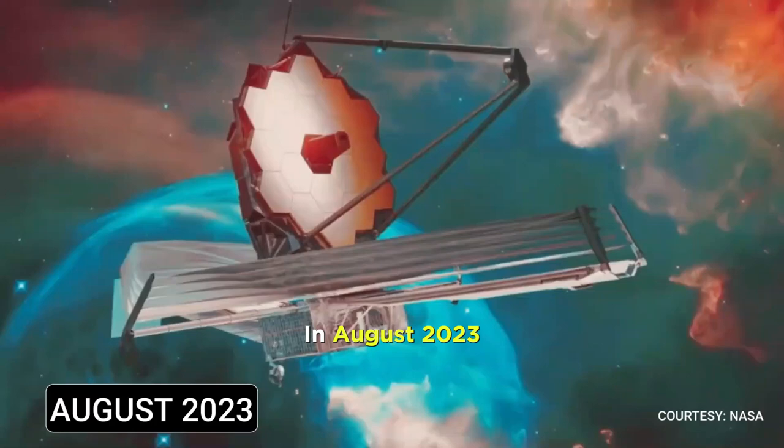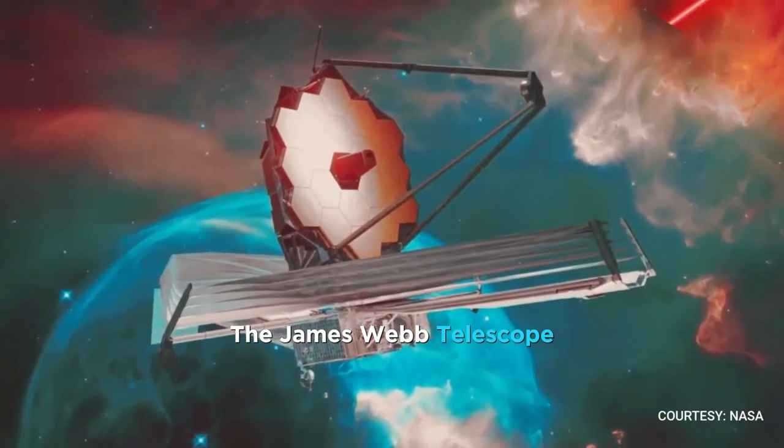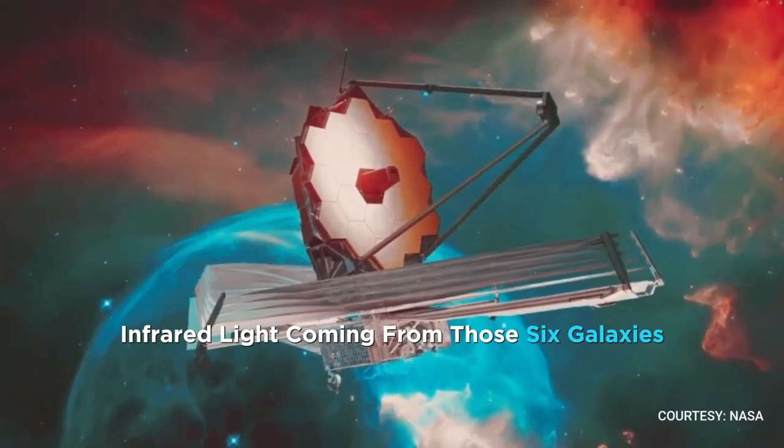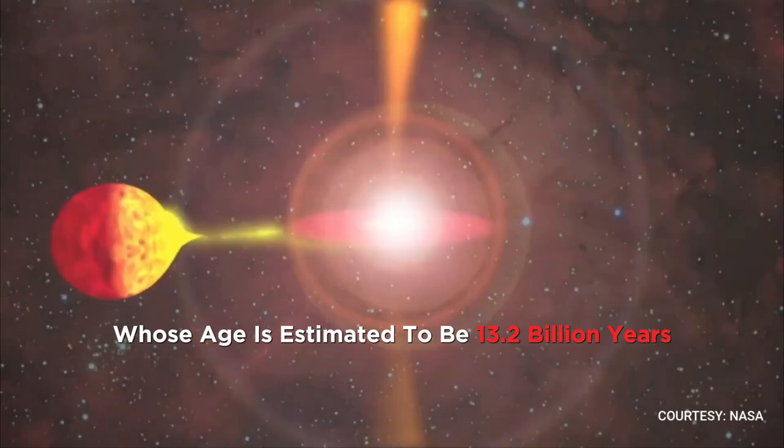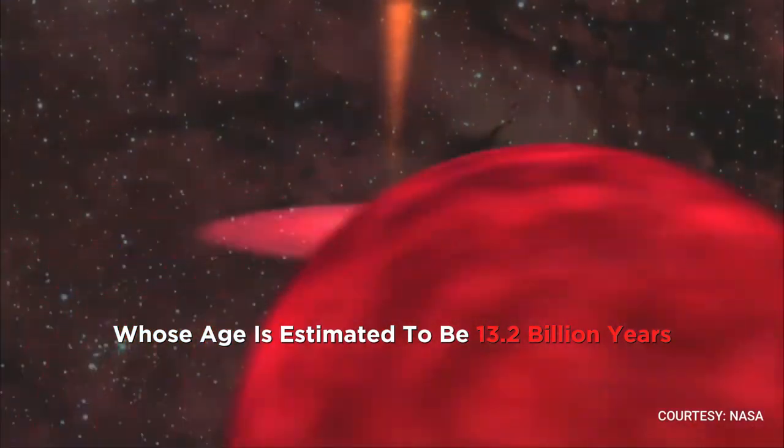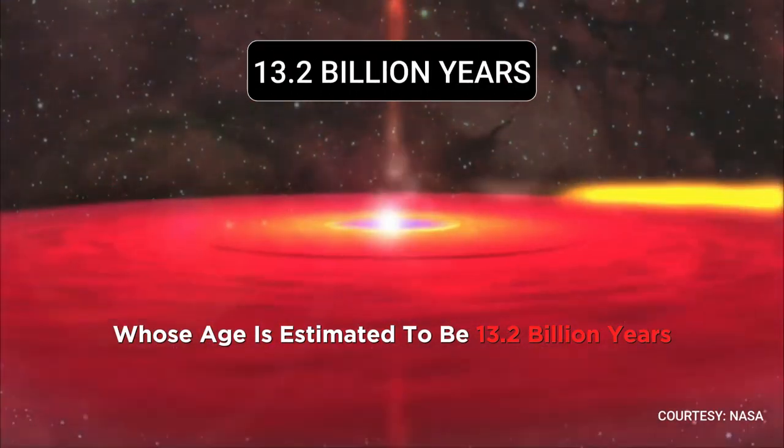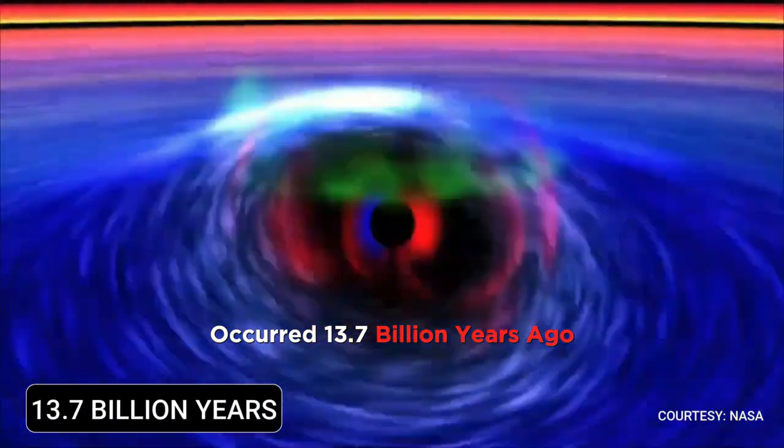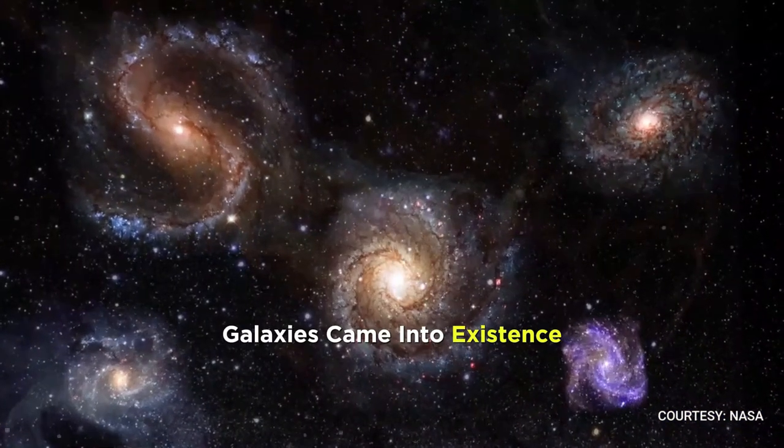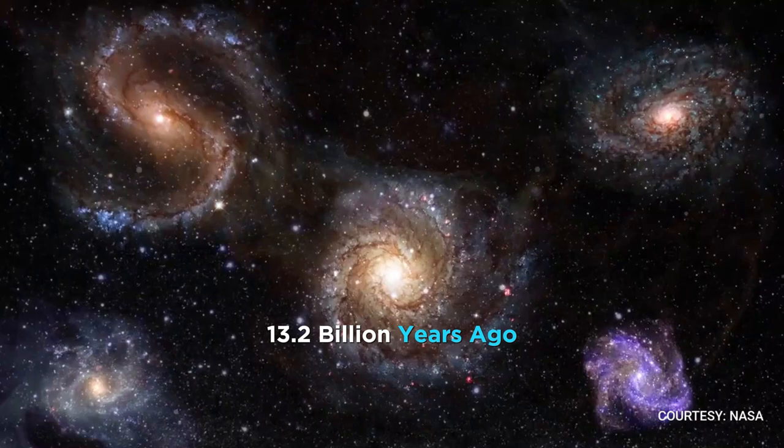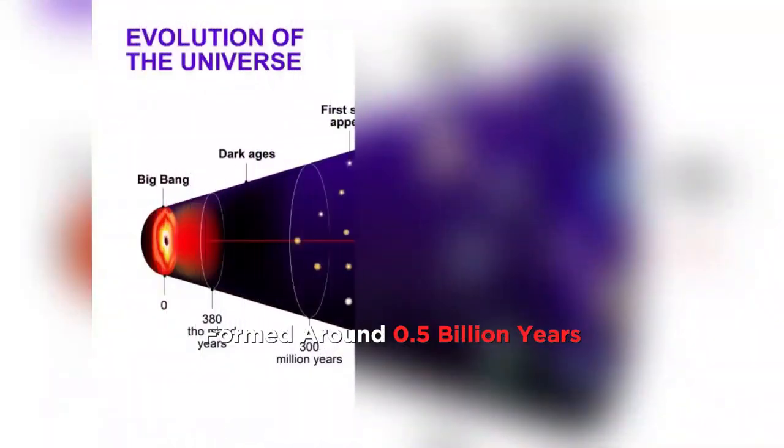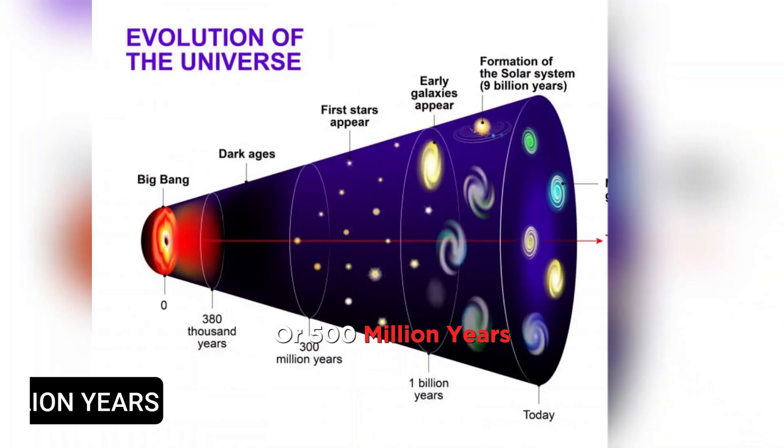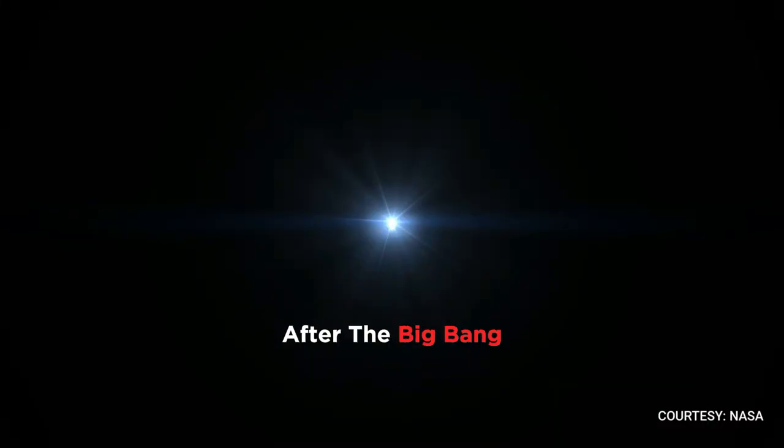In August 2023, the James Webb Telescope intercepted infrared light coming from those six galaxies, whose age is estimated to be 13.2 billion years. If the Big Bang occurred 13.7 billion years ago and these six galaxies came into existence 13.2 billion years ago, it implies that these galaxies formed around 0.5 billion years, or 500 million years, after the Big Bang.